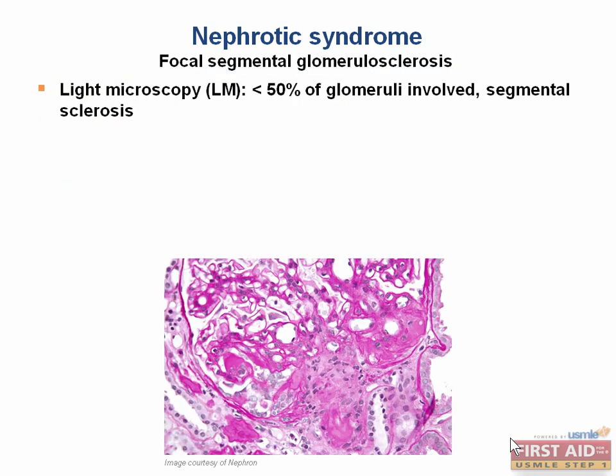Let's start with focal segmental glomerulosclerosis, also known as FSGS. Just looking at the name, we can tell that it's less than 50% of glomeruli involved because it's focal, and because it's segmental, only parts of the glomeruli are sclerosed, meaning they look scarred.